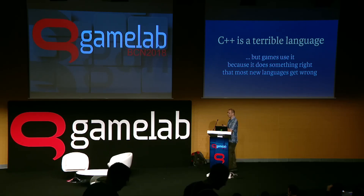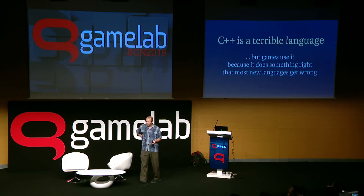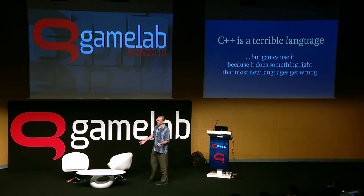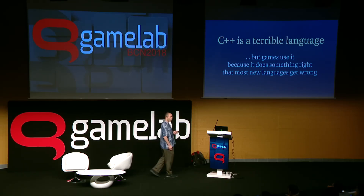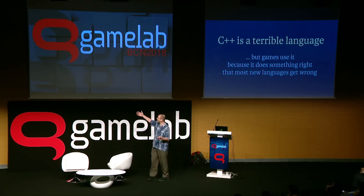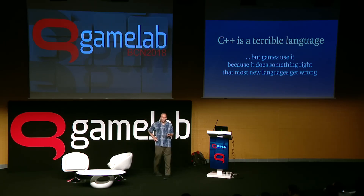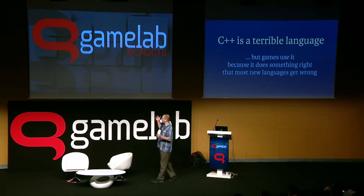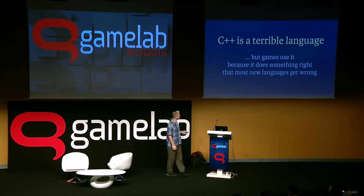Despite the fact that it's such a terrible language, games use it. If you talk about lower-end games, there are games in browsers or that use C#, but the highest-performance games that render the most impressive things and have the most complex simulations all use C++ still. It's the year 2018 and C++ is from the 1980s — the idea for the language was conceived then. So why do we still use it? Because despite as terrible as it is, it still does something right that's very basic, that almost every other language made since then actually gets wrong.